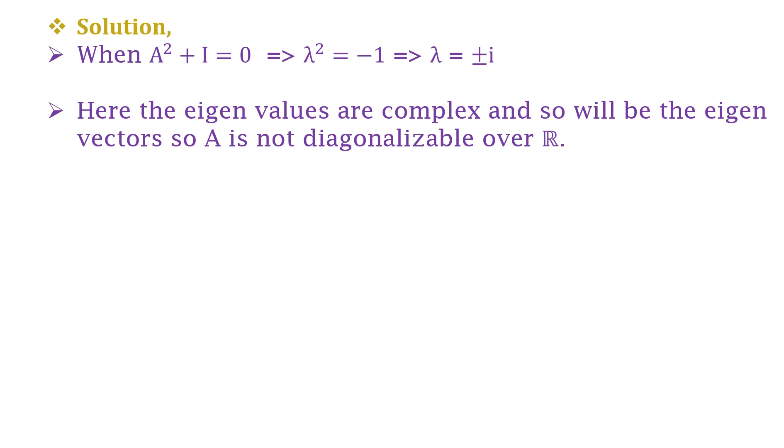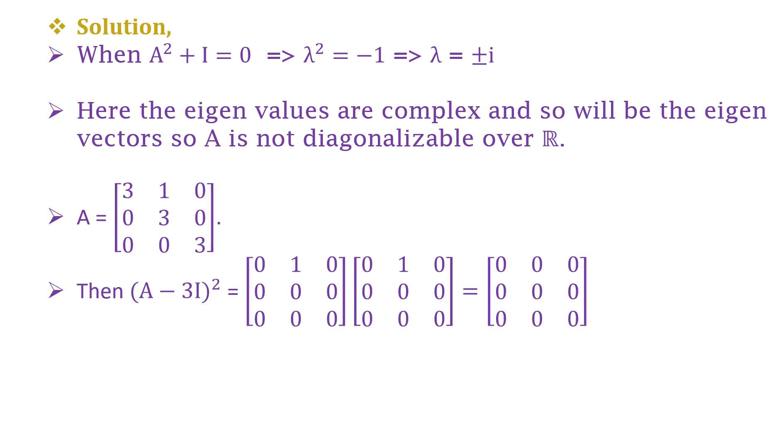For option B, we can take A as a 3×3 matrix with entries 3, 1, 0, 0, 0, 3, 0, 0, 0, 3. It satisfies the condition that (A - 3I)² = 0.